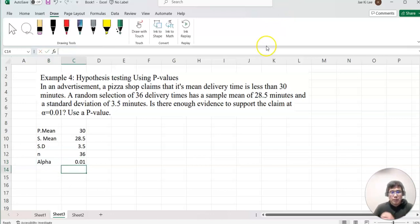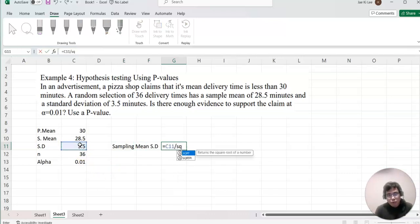We are using this value to analyze the p-value test. To find the p-value, we need to find the sampling mean standard deviation. This equals the original standard deviation divided by the square root of n. Remember that.